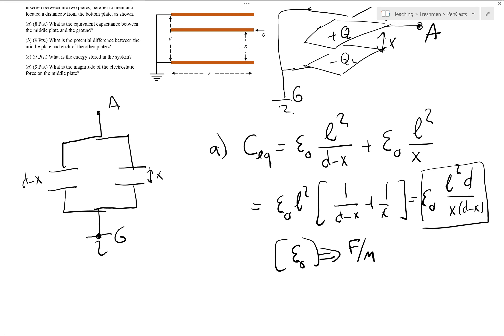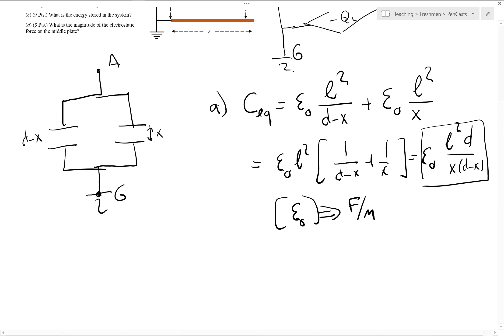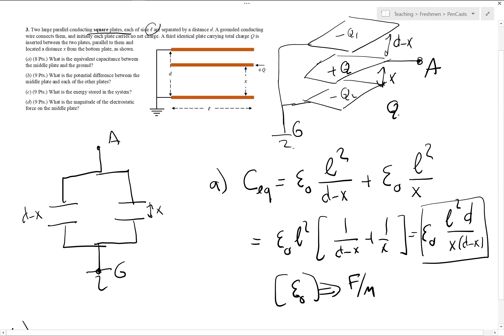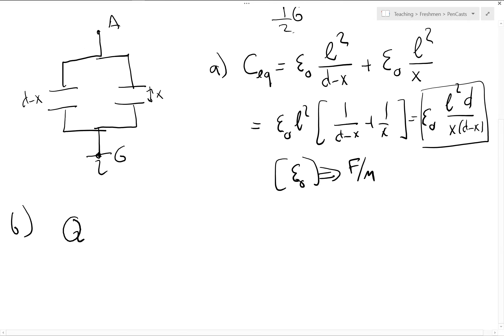What's the potential between the middle plate and each of the other plates? Well, if I actually know the equivalent capacitors, the total charge is Q, right? So here Q1 plus Q2 must equal Q. Well, Q is what? Q is C times V.